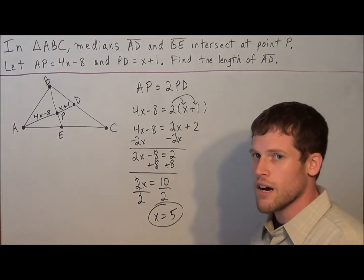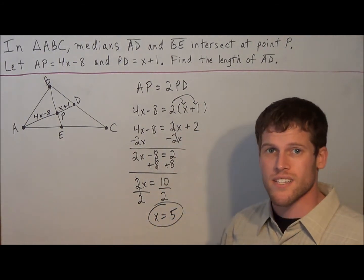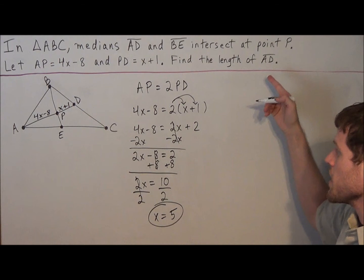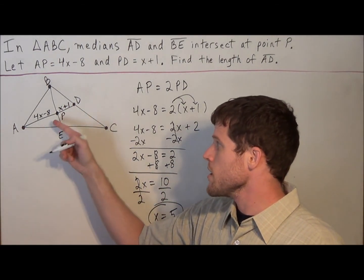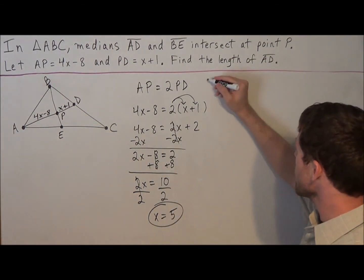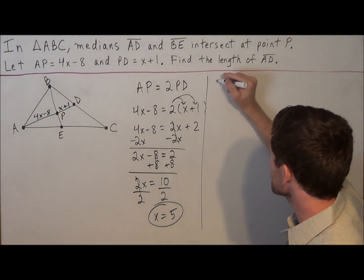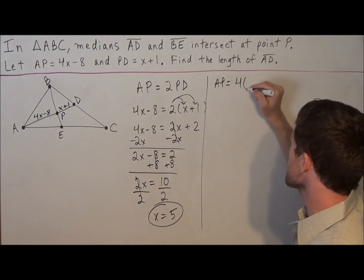But be careful. Students solve for x, they remember the theorem, they're happy. But remember, what is the question asking us to find? We need to find the length of AD. So the strategy is, if we're trying to find the length of the entire thing, we need to find the length of each piece, and we're going to add them together. So first, we can find the length of AP.